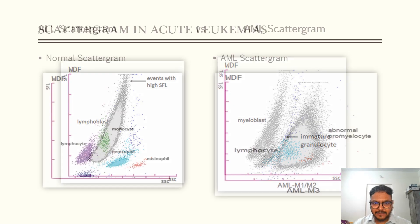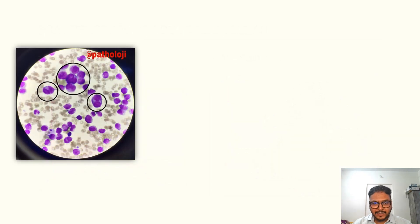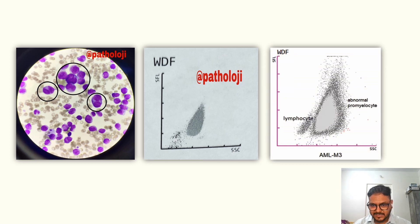Now coming to acute promyelocytic leukemia, AML M3. Here we can see two clusters. First is of lymphocyte. Second is of abnormal promyelocyte. As we can see it shows a typical pattern that is of a tear drop. So when in your routine you see this pattern you must be aware or you must be alert that you are dealing with some medical or hematological emergency. In our institute we had seen a case of acute promyelocytic leukemia microgranular variant. So this was the scattergram which we had got, one of lymphocyte and other tear drop shift of promyelocyte. And this was exactly matching with that of the studies.